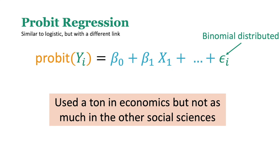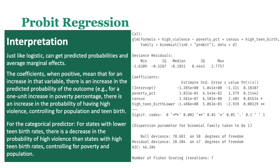We'll start with probit regression. What's nice about this is it's really similar to logistic, but it just has a different link. It's used a lot in economics, but I haven't really seen it a whole lot in other social sciences. This model is looking at whether you're in a high-violent or low-violent state — it's just binary — and we're predicting it based on poverty percent, population, and a categorical variable called high teen birth. We used a binomial distribution with link equals probit instead of logit.